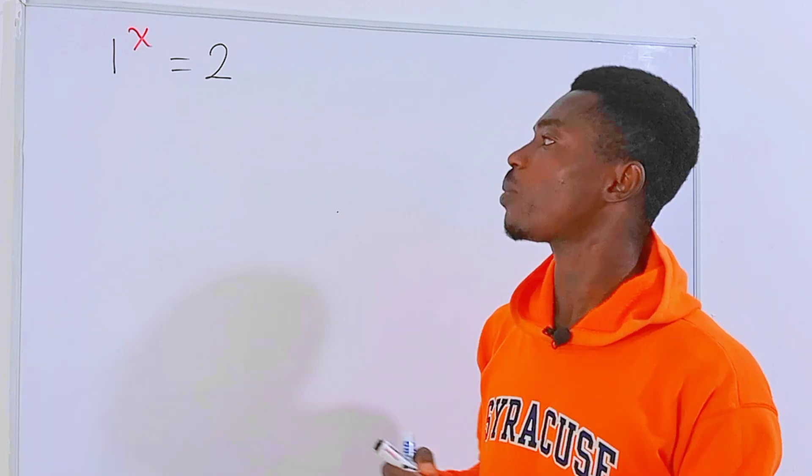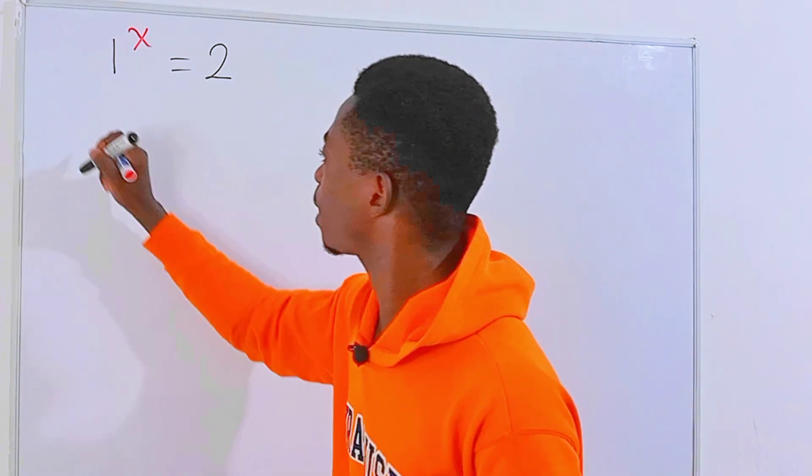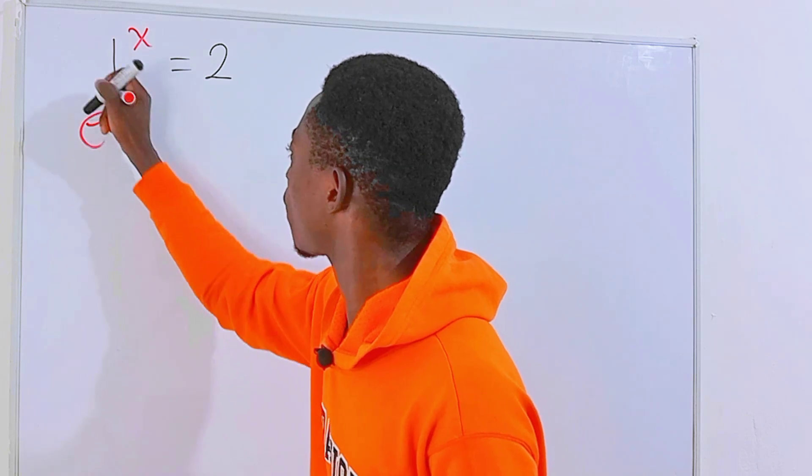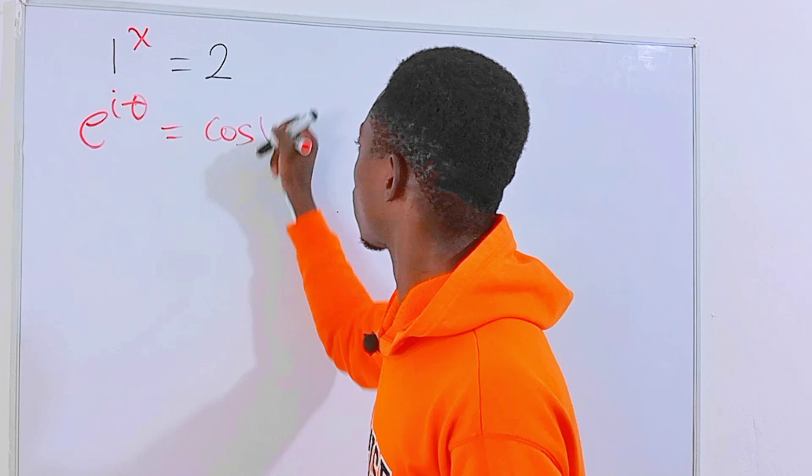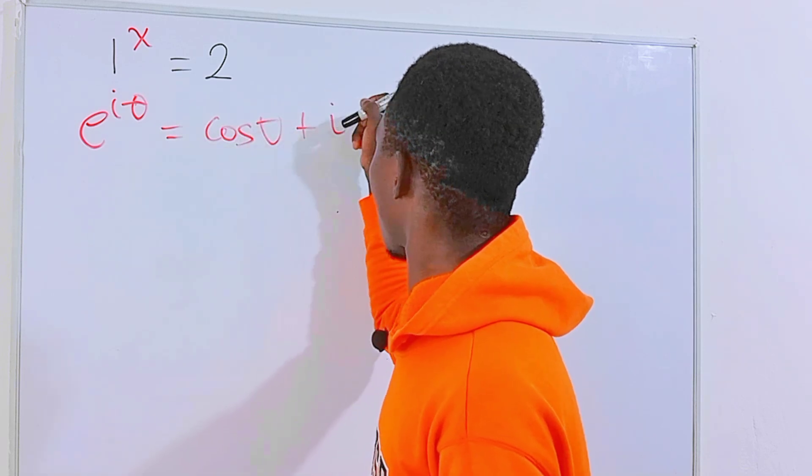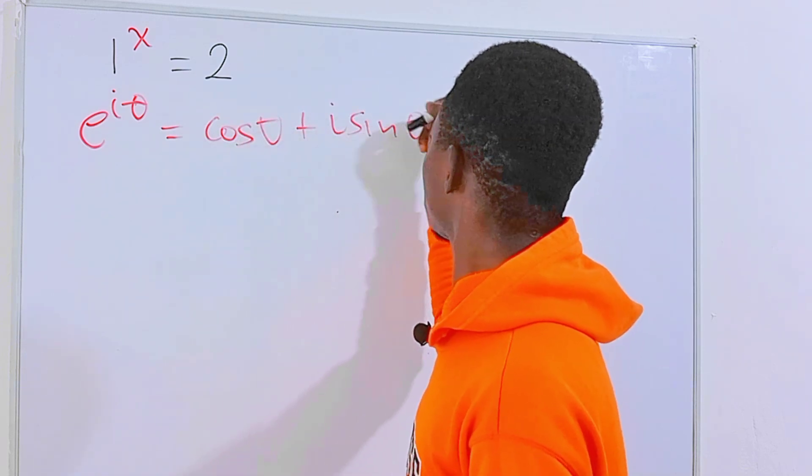So thanks to Euler for his formula. Euler's formula is simply given by e to the power i theta equals cos theta plus i sin theta.